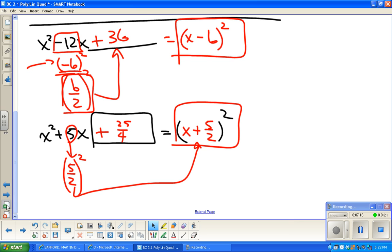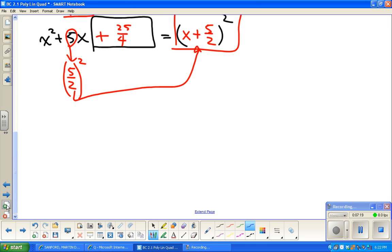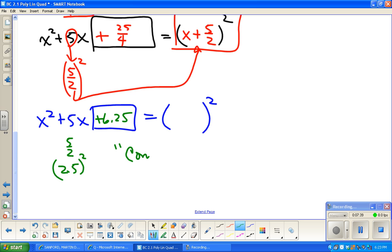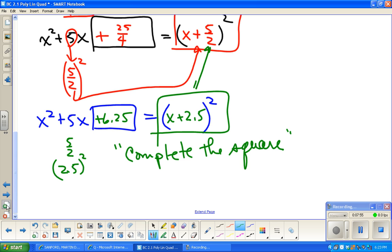For those of you following along at home, which should be everybody, if you wanted, you could have done decimals. Half of 5 is 2.5, square it, 6.25. Now I have completed the square, that's where the phrase comes from. The half of number still goes there. Notice these really are the same thing.